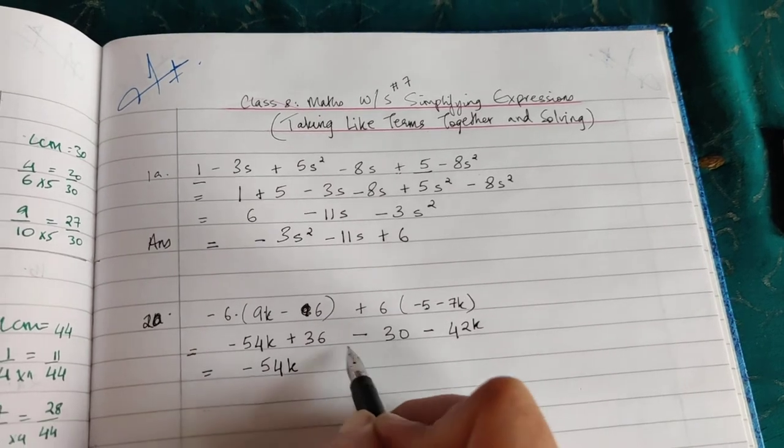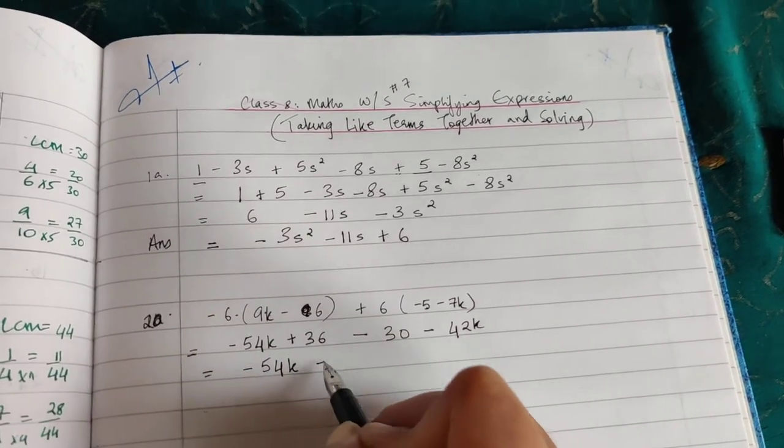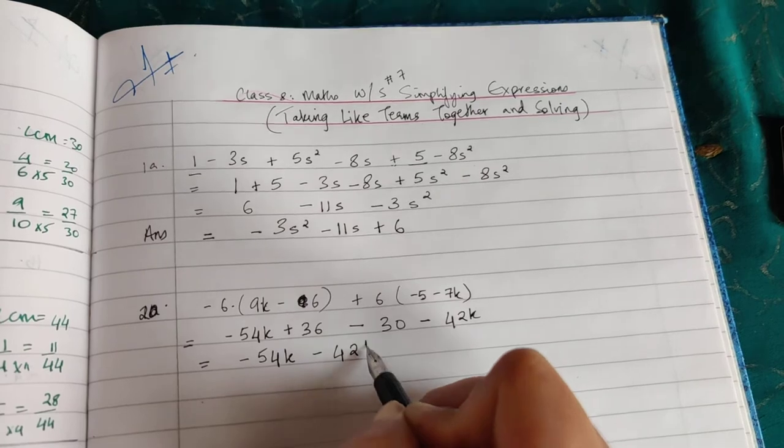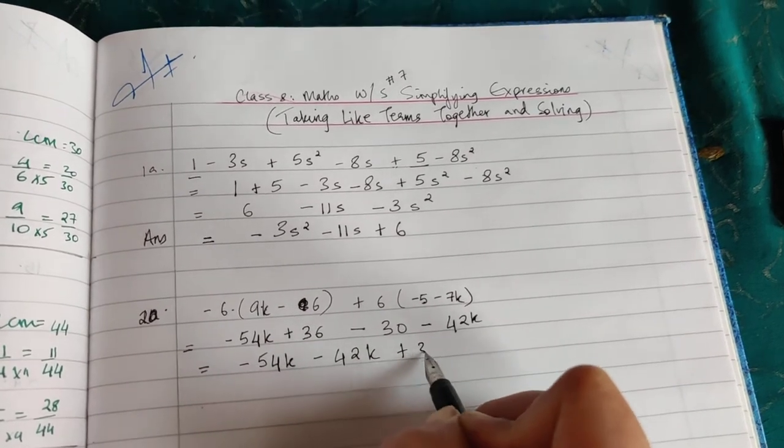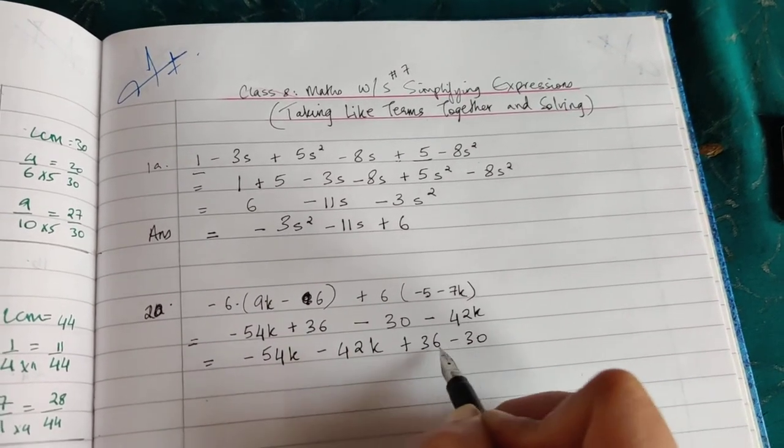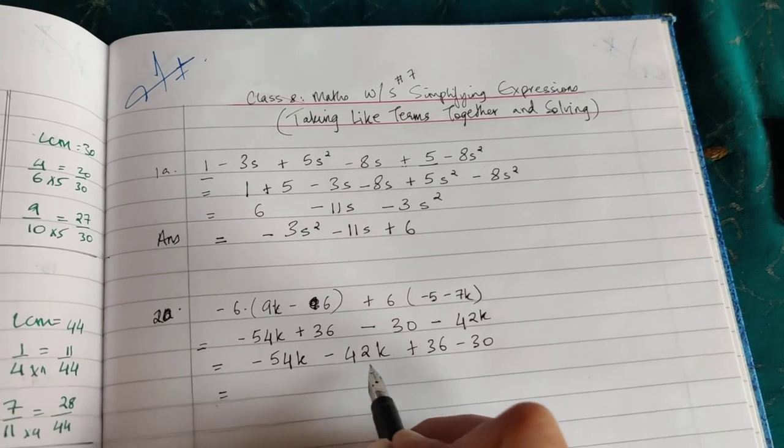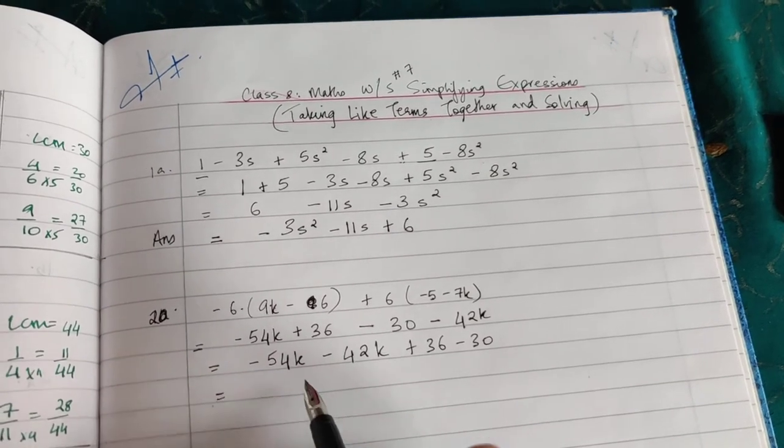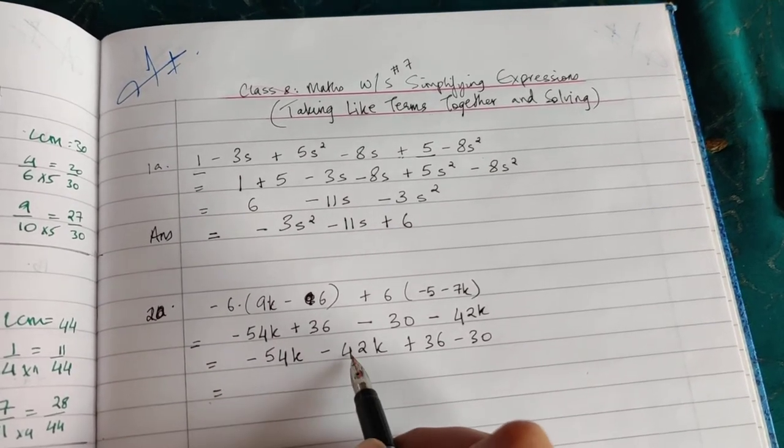Bring the k next to this: -42k. Then we have a number, +36 - 30. So the constants come at the end. Just solve now for the k terms: -54 - 42, this is more minus.